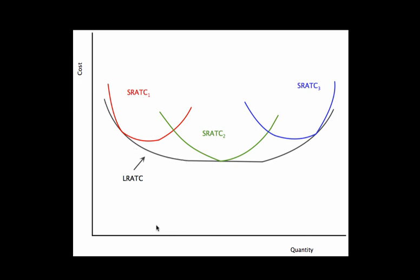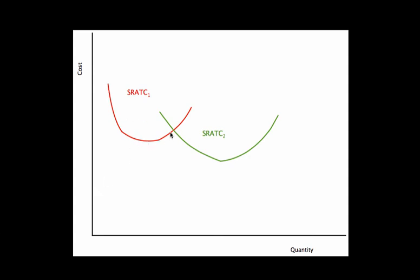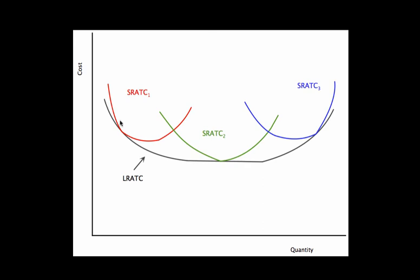We're optimizing our long run average costs for any given quantity of output. By drawing it as a smooth curve, I'm assuming we can make tiny adjustments and be anywhere along this curve — there's going to be some short run curve that corresponds to any point on this long run curve. If we wanted to show a more discrete case with only two or three choices, we'd just trace out a stepped long run curve based on whichever short run ATC is lowest at each quantity. In the continuous case, there are lots of short run average total cost curves to choose from, and in the long run I could be anywhere along this curve.